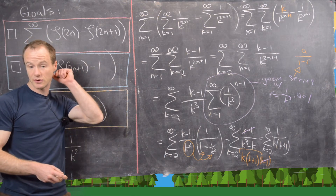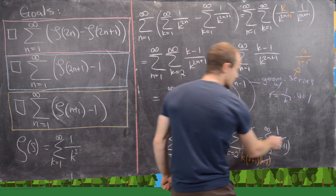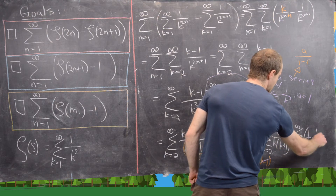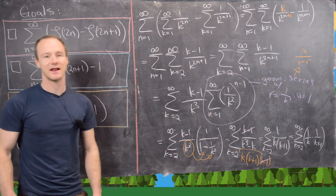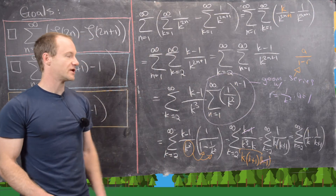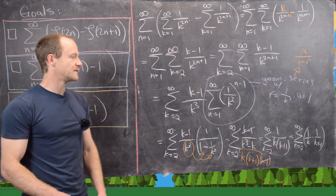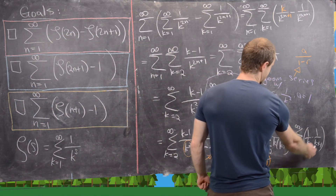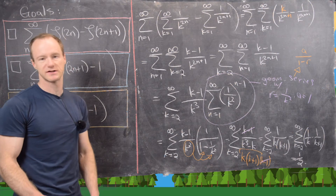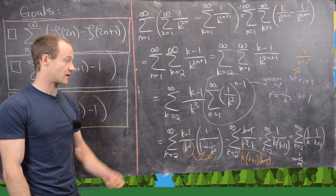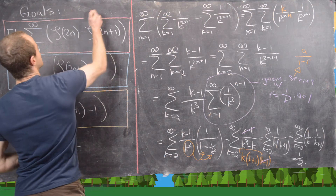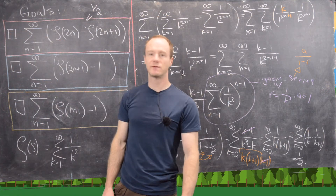Using partial fraction decomposition, we rewrite 1 over k(k+1) as 1 over k minus 1 over k+1. This is a telescoping series — everything cancels except the first term, which gives 1/2. So the sum from n equals 1 to infinity of zeta(2n) minus zeta(2n+1) equals 1/2. That completes the first part.